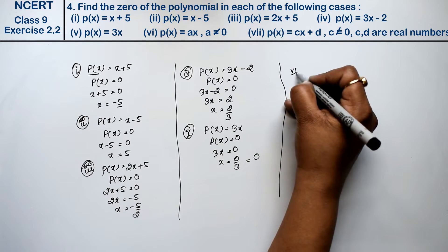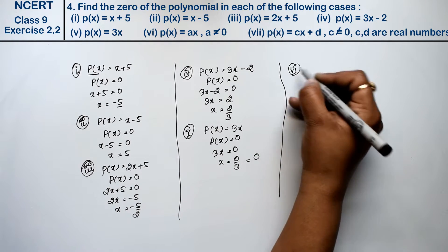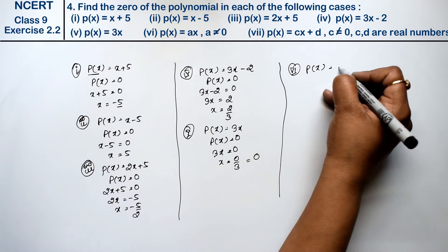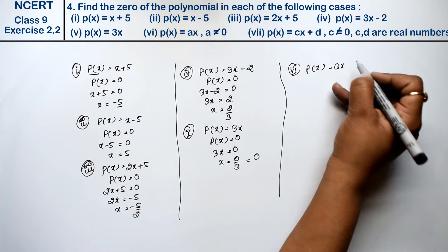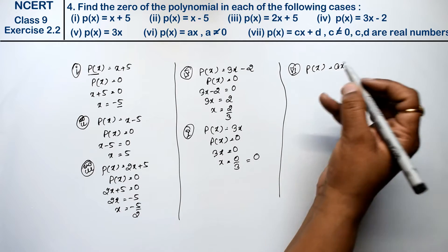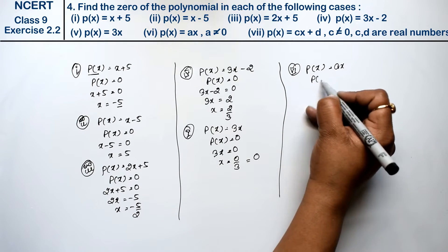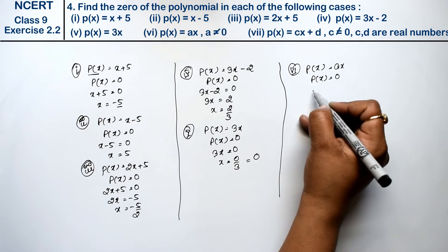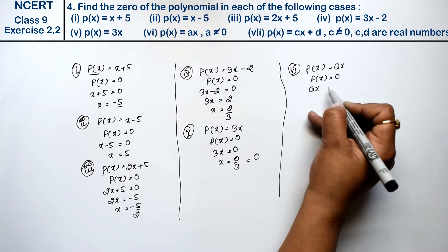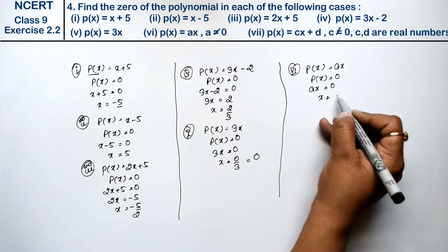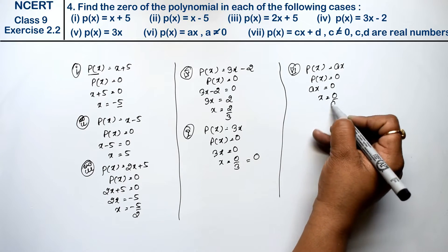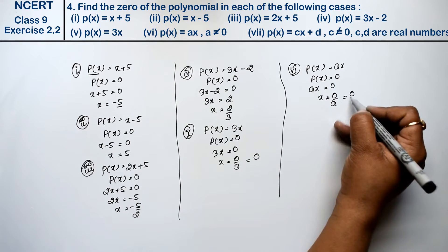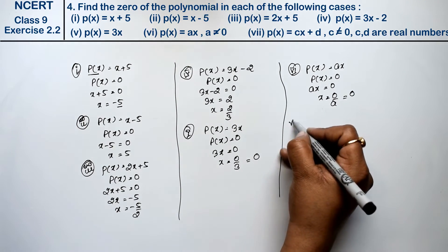Let's do sixth part. p(x) equals to ax, where a is not equal to 0. तो हम p(x) equals to 0 रखेंगे, तो ax equals to 0. तो x की value कितनी आगई? 0 upon a, that means 0. Answer.